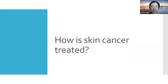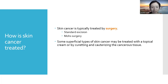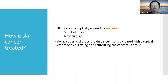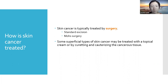Now let's talk about how skin cancer is treated. Skin cancer is typically treated by surgery, whether it's squamous cell, basal cell, or melanoma. Standard excision involves cutting out the area with the skin cancer, usually taking a margin of normal skin around it to ensure complete removal. This involves local anesthesia and a few stitches to close the wound. The tissue removed is sent to the laboratory to confirm that the surgery has fully removed the skin cancer with clean margins. In some scenarios, Mohs surgery may be offered as a treatment, which is very common for squamous cell and basal cell cancers.